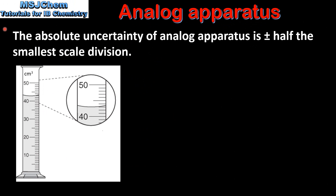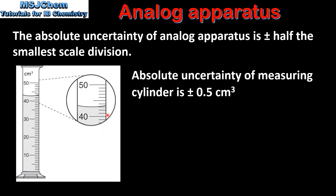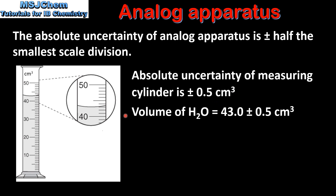Next we look at the uncertainty of analog apparatus. The absolute uncertainty of analog apparatus is plus or minus half the smallest scale division. The smallest scale division on this measuring cylinder is 1 centimeter cubed. Therefore the absolute uncertainty of the measuring cylinder is plus or minus 0.5 centimeters cubed. So the volume of water in the measuring cylinder can be recorded as 43.0 plus or minus 0.5 centimeters cubed.